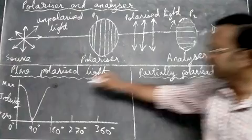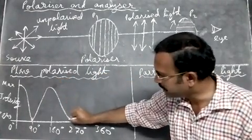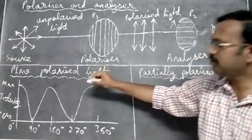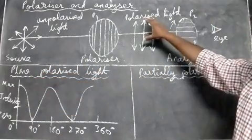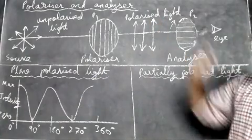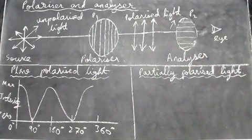Then again when you rotate it, the intensity will decrease to zero, then again increase. You can see that the intensity changes from maximum value to zero value. Then you can say the light wave is fully polarized or plane polarized.